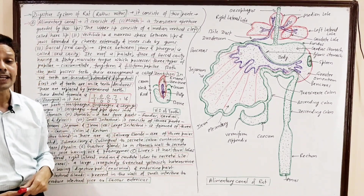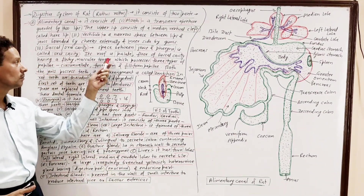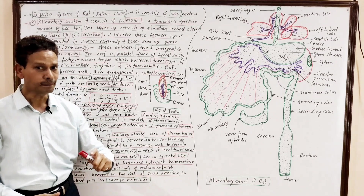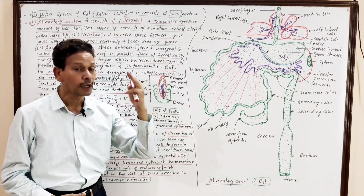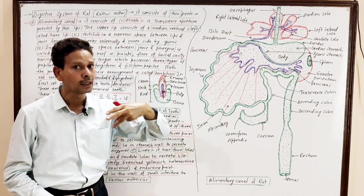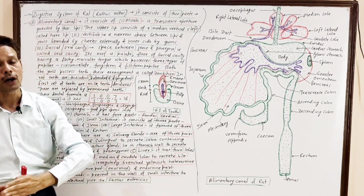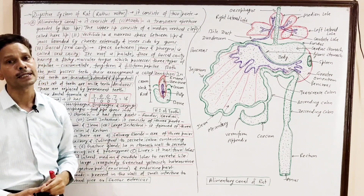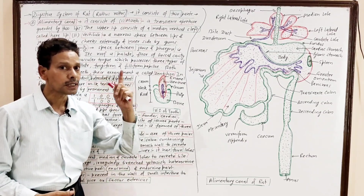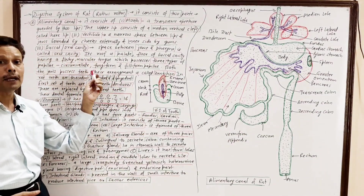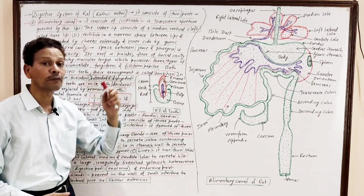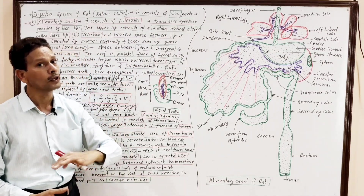Taste buds are present on the taste papillae. The tongue consists of three types of papillae: circumvallate papillae, fungiform papillae, and filiform papillae. Circumvallate papillae are present at the base of the tongue, while fungiform and filiform papillae are present all over the surface of the tongue and are numerous.